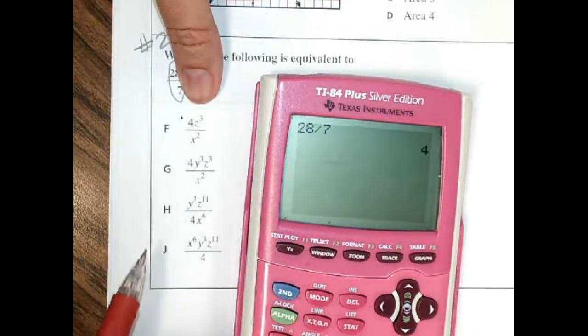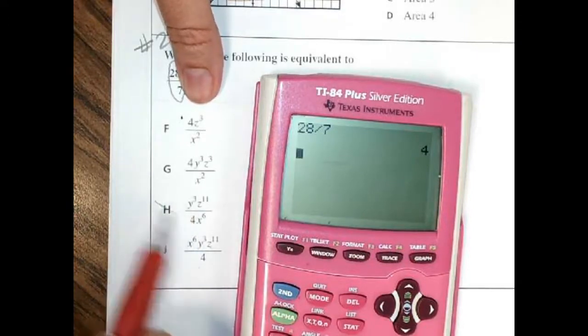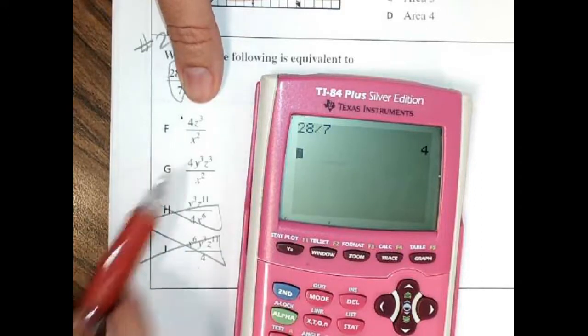So right off, I can eliminate this one - it doesn't have a 4, it has a over 4, and this one has the 4 on the bottom, so those are wrong. So now I'm just looking at these two.